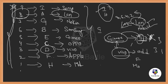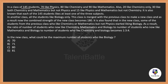In a class of 145 students, 70 students like physics, 80 like chemistry, 90 like mathematics. Also, 20 like chemistry only, 30 like both chemistry and mathematics but not physics, 50 like physics and mathematics but not chemistry. Each of the 145 students likes at least one of the 3 subjects. In another class, all students like biology — this class is merged with the first. First, we will fix the data for the original class using a Venn diagram with three circles: physics, chemistry, and mathematics.